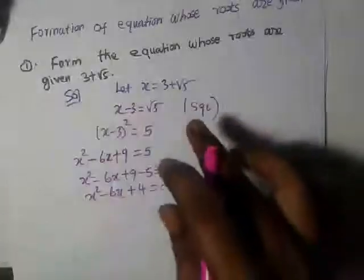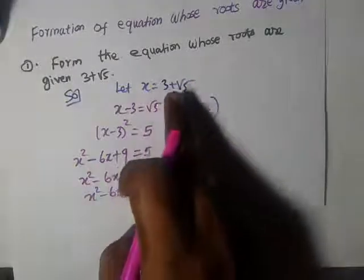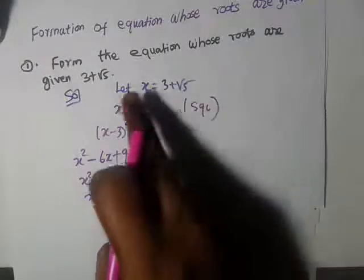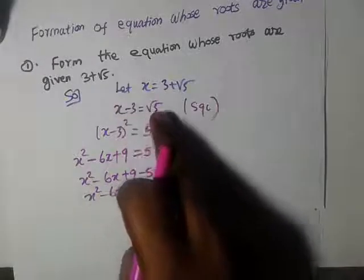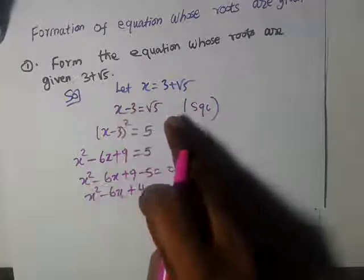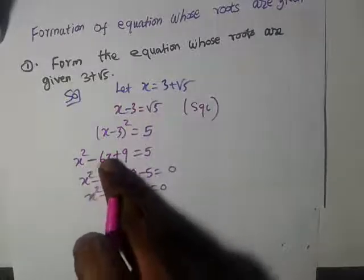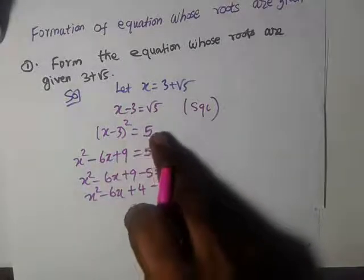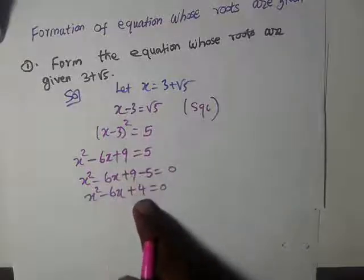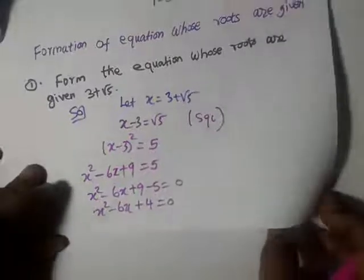So x² minus 6x plus 9 minus 5 equals 0, which gives x² minus 6x plus 4 equals 0. This is the required answer.